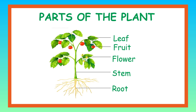The fruit is the seed-bearing structure of a plant that develops from the flower. The flower is a colorful and reproductive part of a plant. The stem is the main supporting structure of a plant that transports water, nutrients, and food between the roots and leaves. The root is the underground part of a plant that anchors it to the soil and absorbs water and minerals.